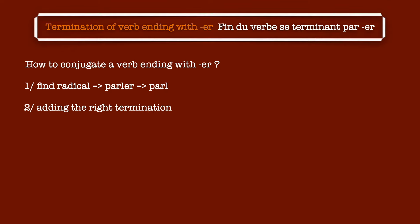Step two is to add the right termination. What you need to know is that there is a specific termination for each subject personal pronoun. For the first person singular, the termination is -e. For the second person singular, the termination is -es. As you can hear, we don't pronounce the -s. For the third person singular, the termination is the same as the first person singular, so -e. For the first person plural, the termination is -ons. For the second person plural, the termination is -ez. And for the last person plural, the termination is -ent.